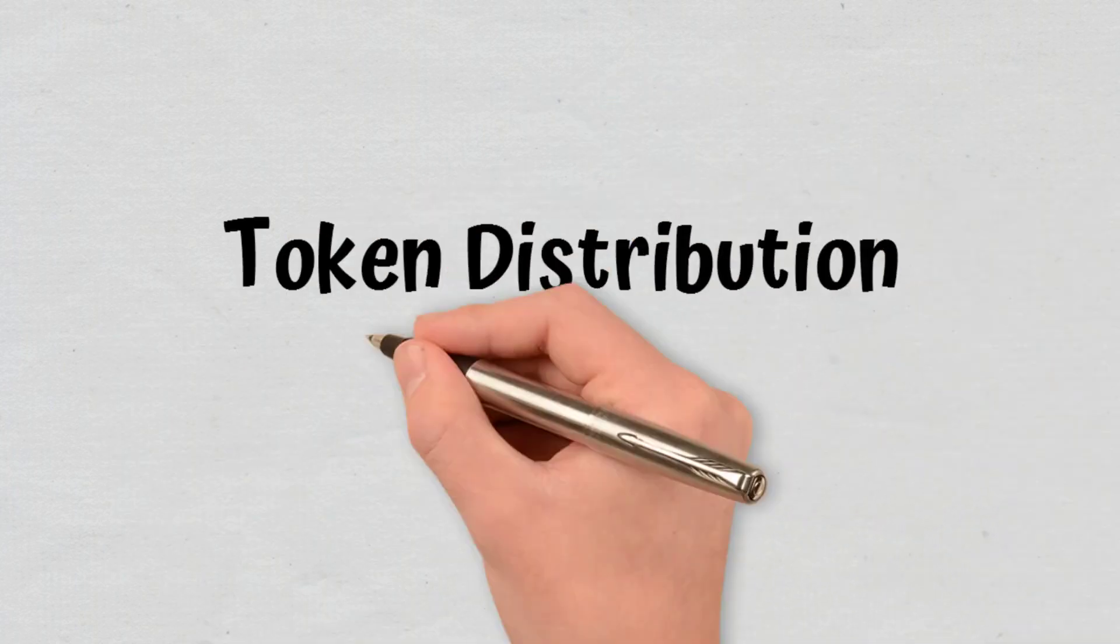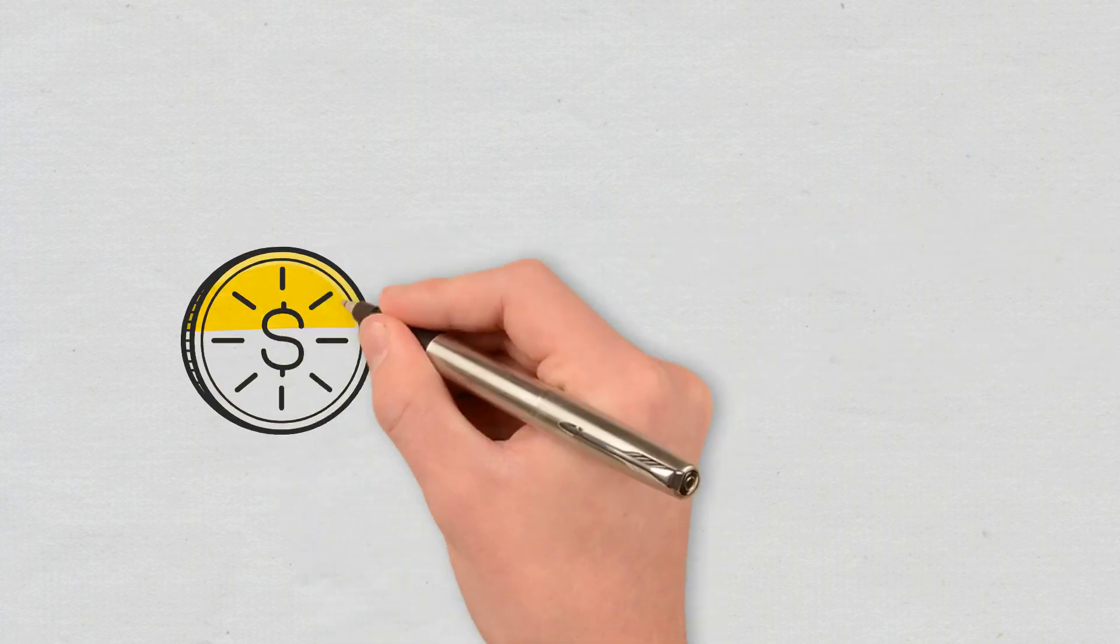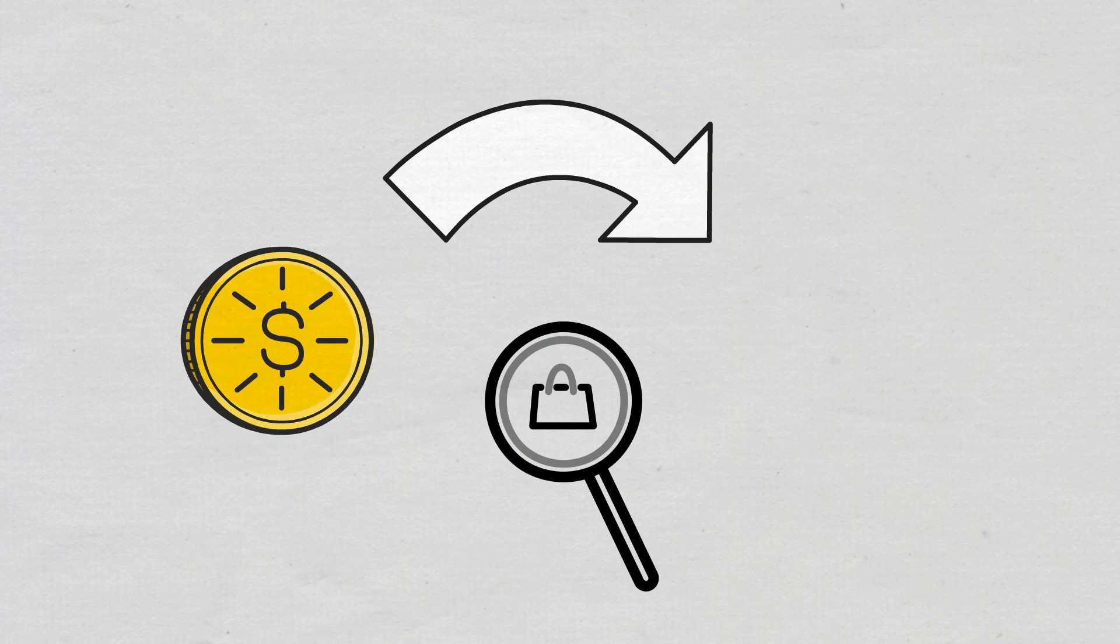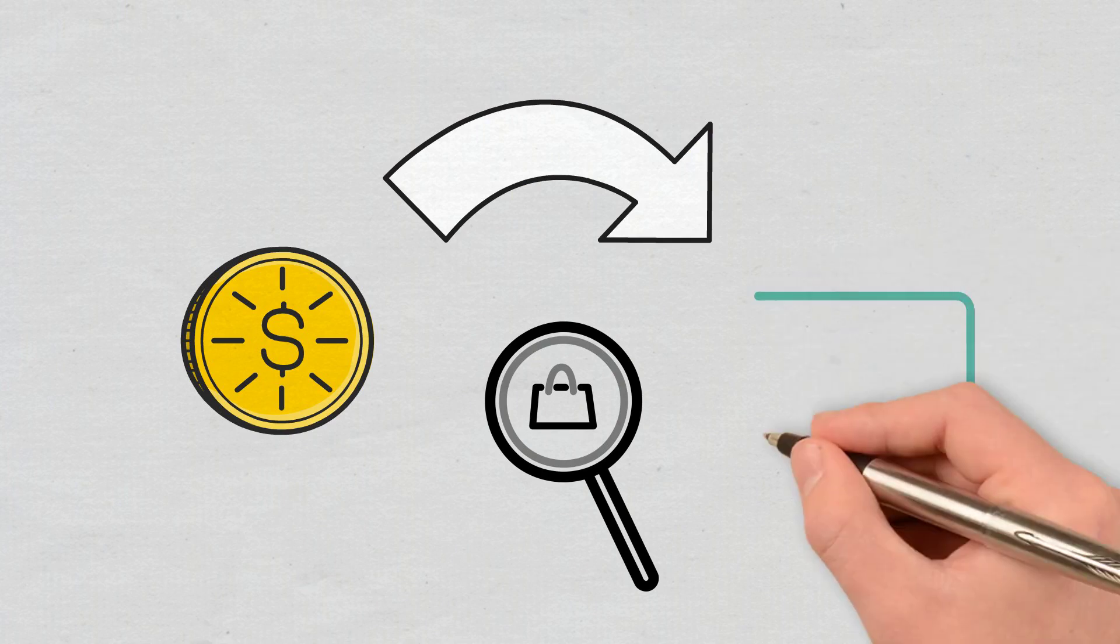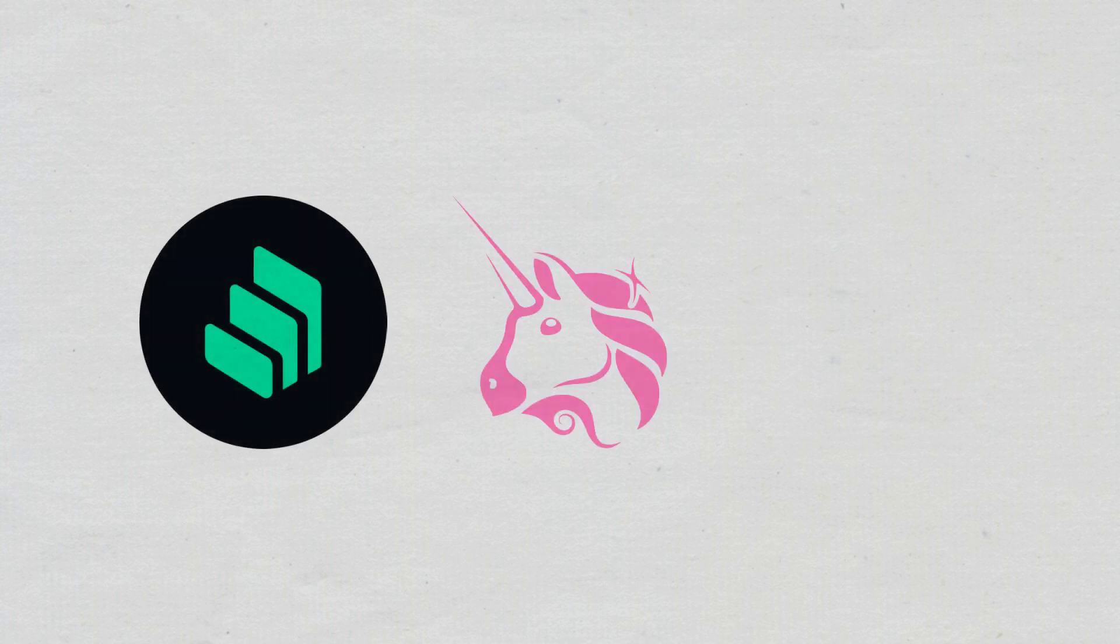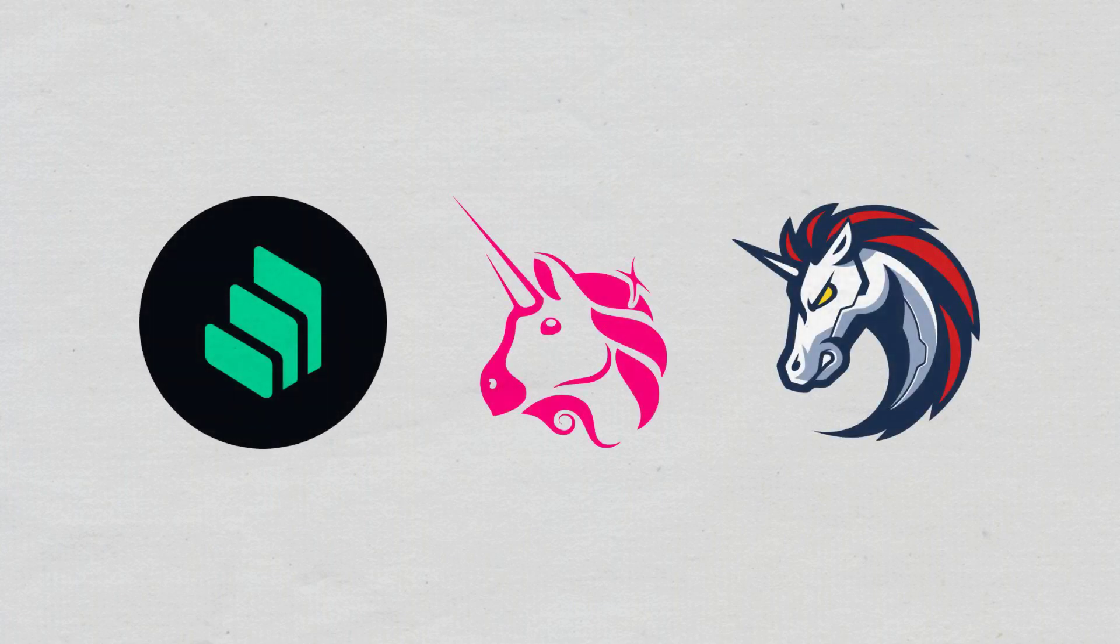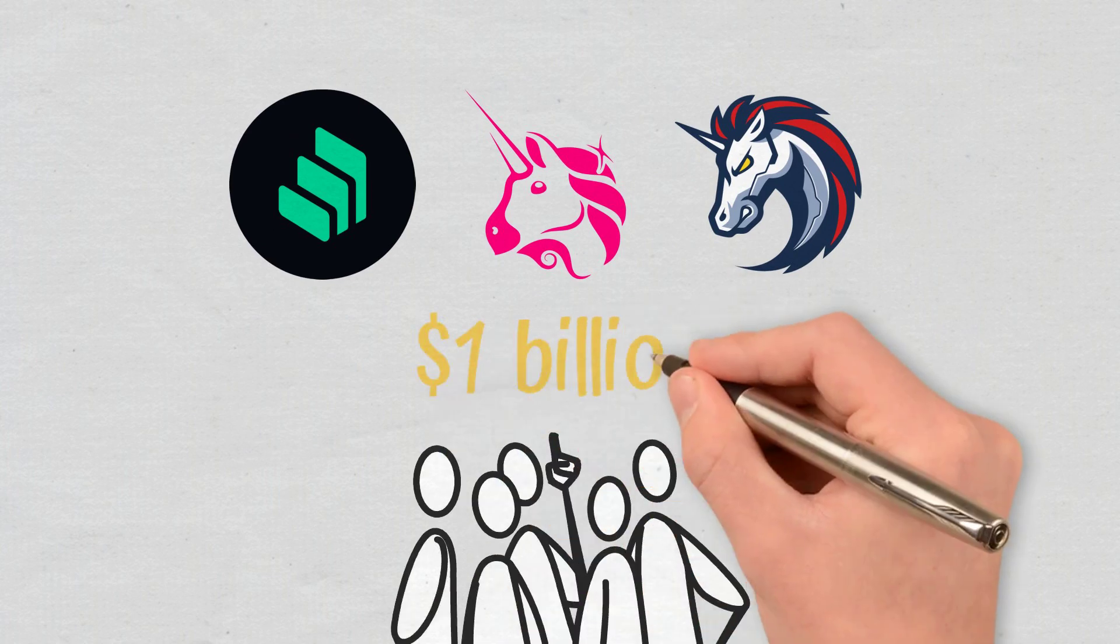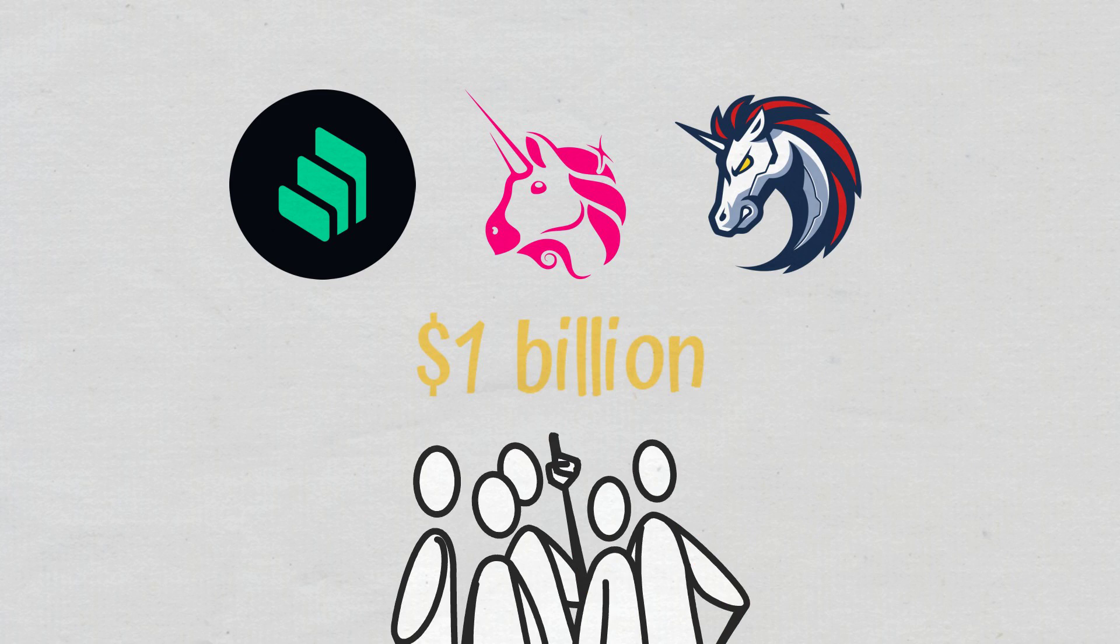Token distribution approaches. Some DeFi projects have even bypassed token sales, launching and distributing the token directly into the wallets of those using their protocols. For example, Compound, Uniswap, and 1inch decided to approach token distribution differently, airdropping more than $1 billion in tokens to their users in 2020. This incentivized usage and provided participants with governance rights.